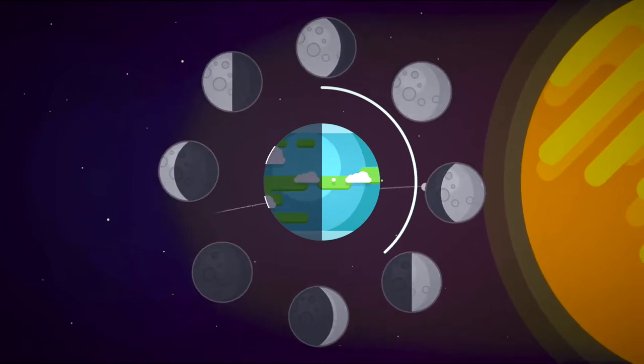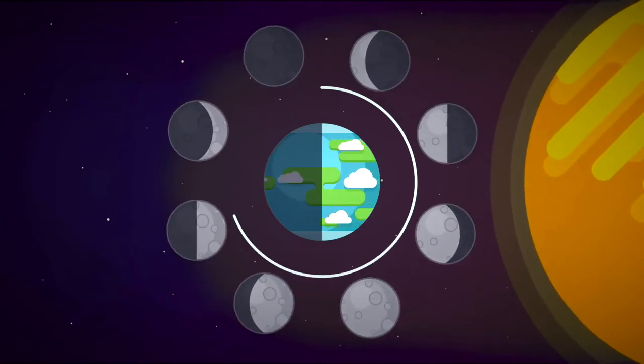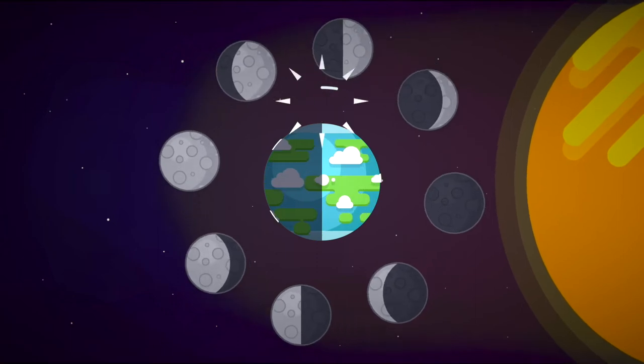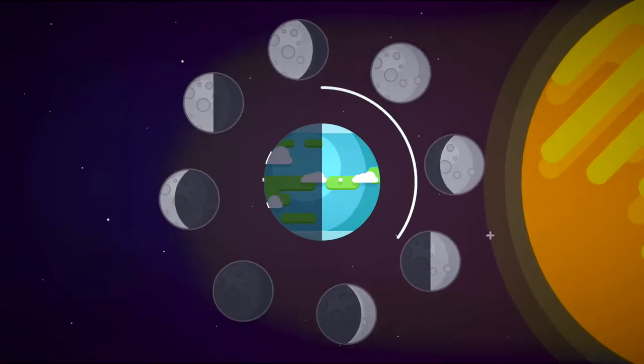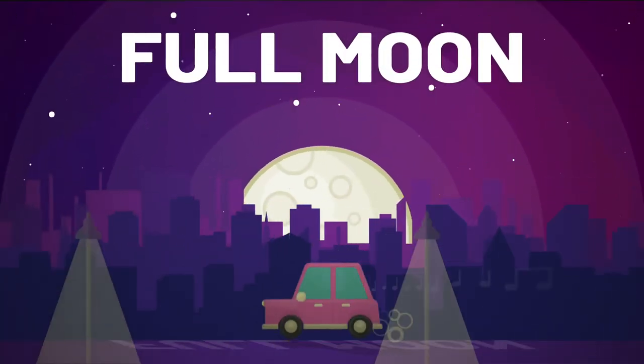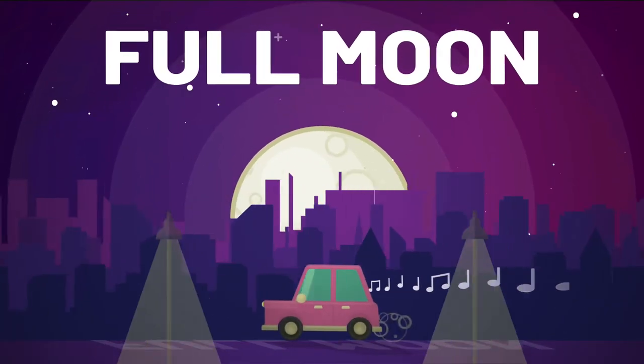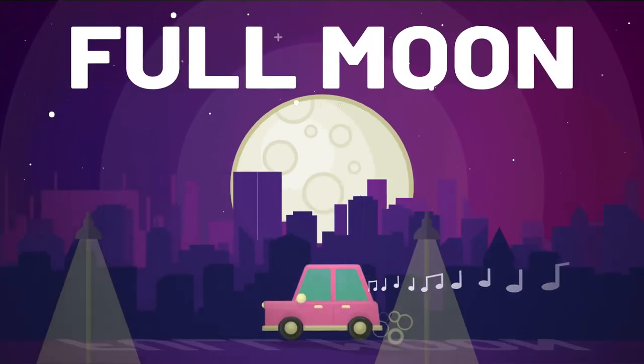Of course, half of the Moon is always illuminated by the Sun, but from our vantage point on Earth, we only see part of its bright side most of the time. But once a month, we see the Moon in all of its glory, fully illuminated in a full Moon.